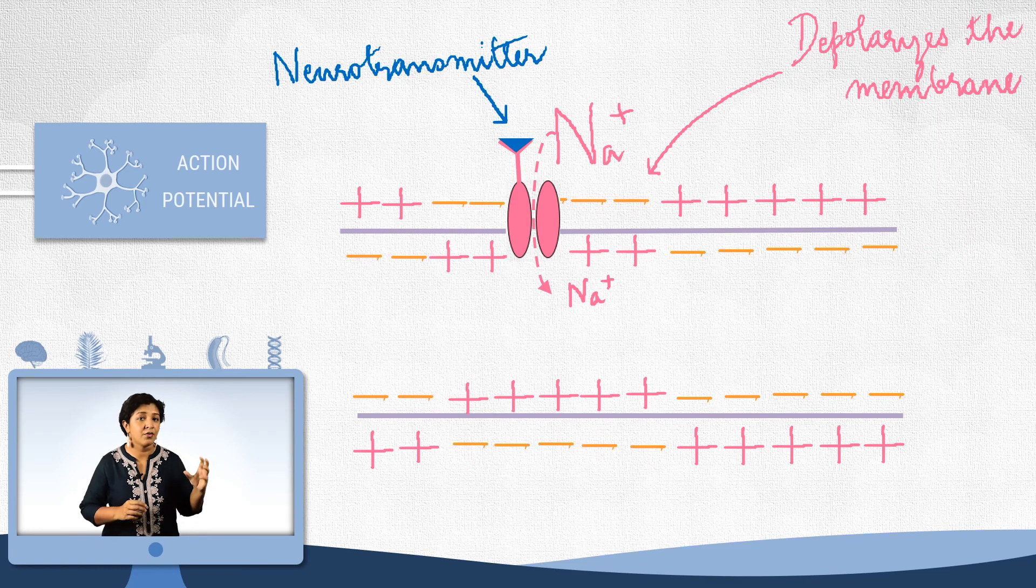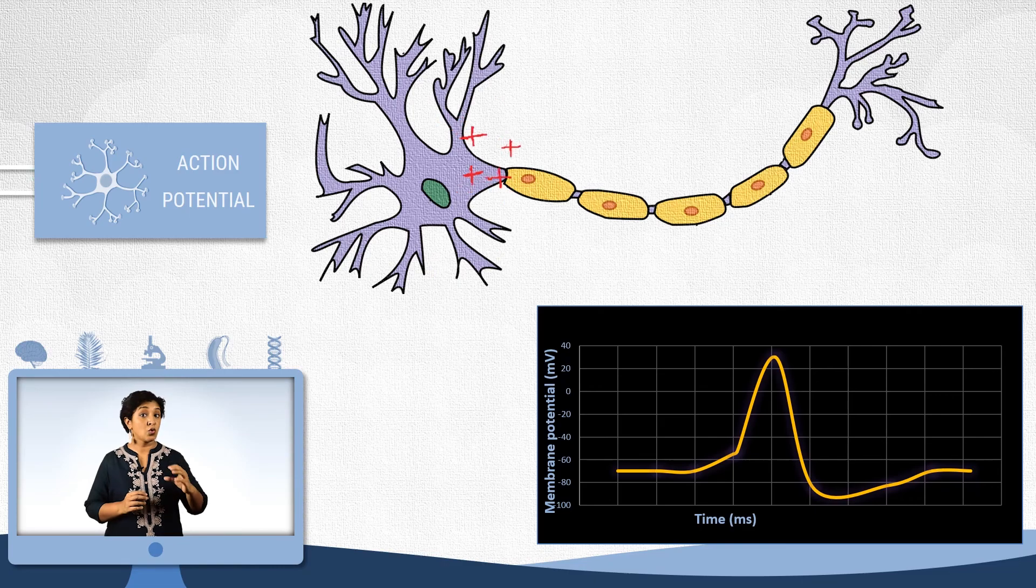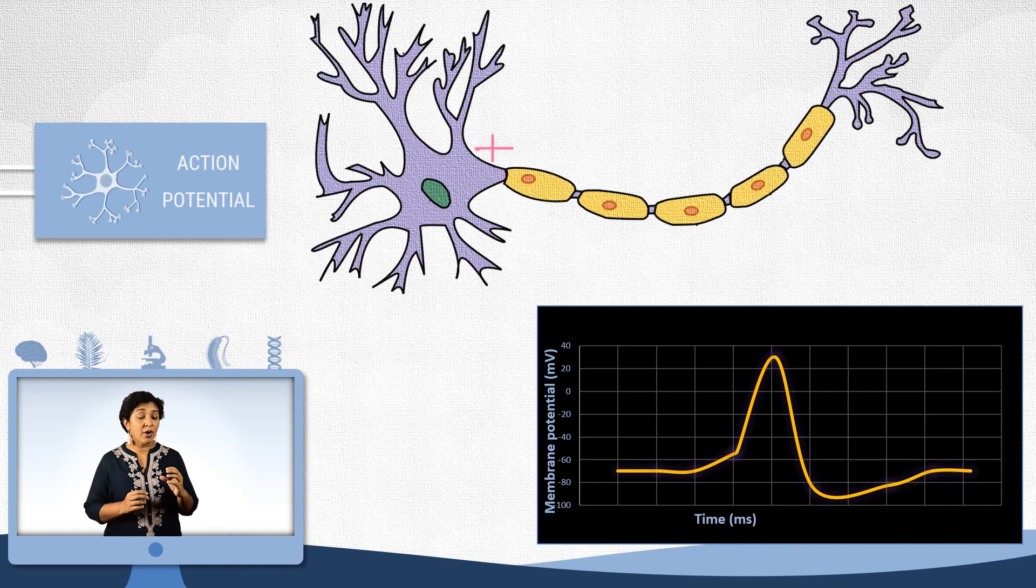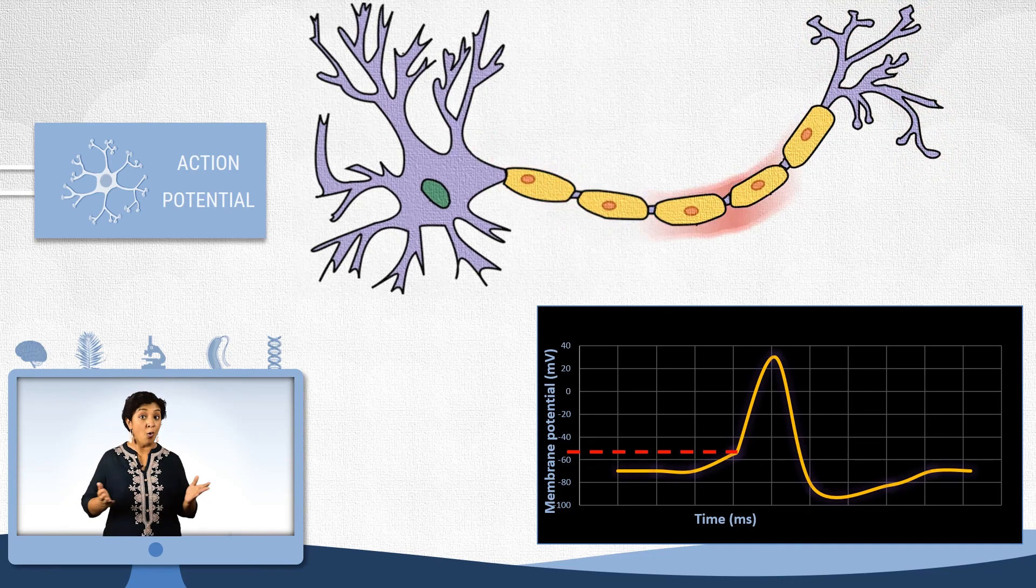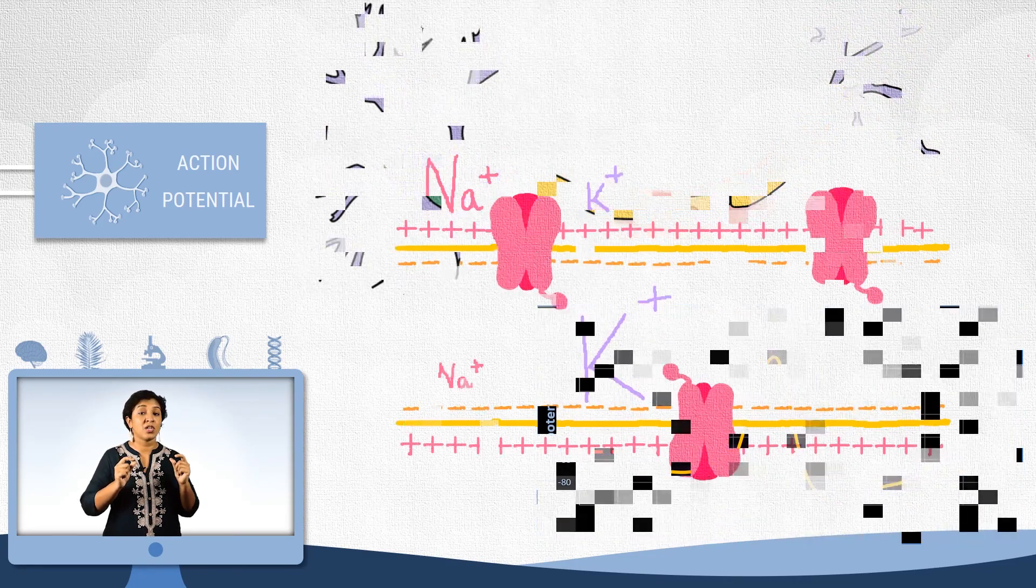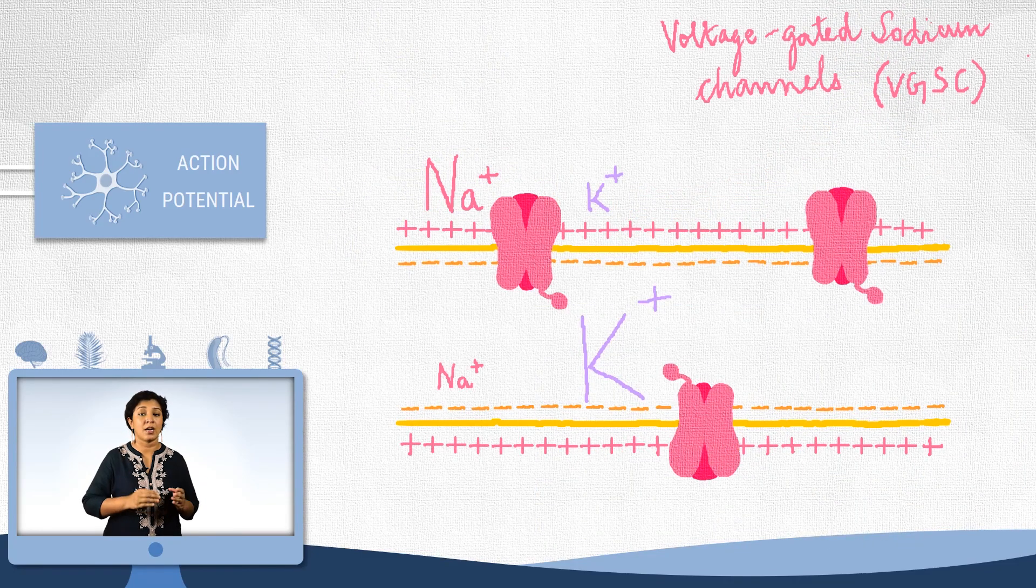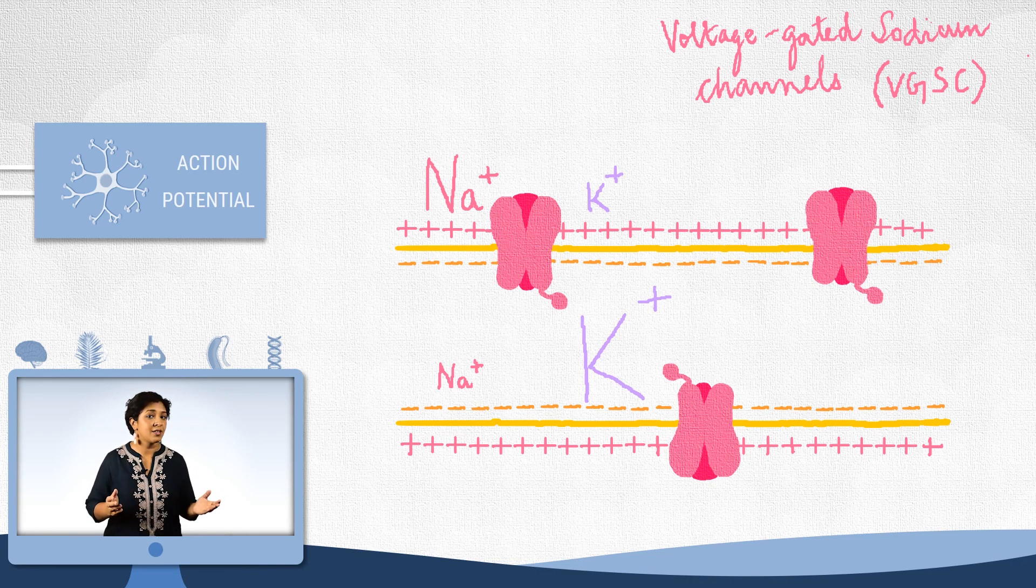And sodium coming in will depolarize the membrane at the dendrites. Now, it is the summation of the stimuli from all the dendrites that reaches the axon. And if the amount of sodium that has come in depolarizes the axonal membrane to minus 55 millivolt, then an action potential will fire. How? Well, the axonal membrane is lined by a very special type of channel called the voltage-gated sodium channel. They open at a specific voltage. Any guesses what that is? Yes, it is minus 55.